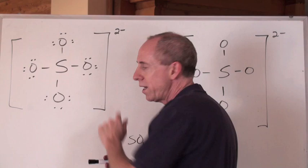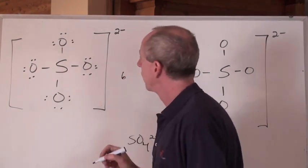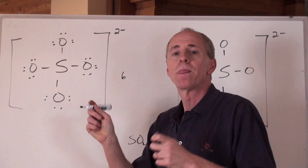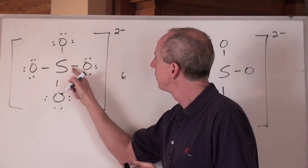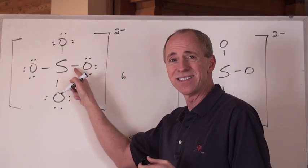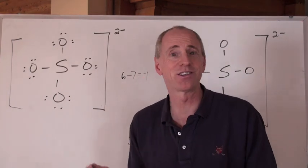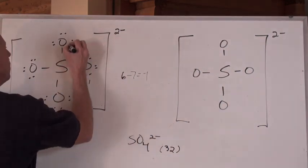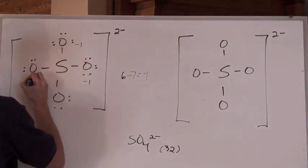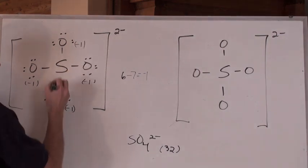For this oxygen right here, it's normally in group 6 of the periodic table, but what's its assigned valence in this molecule? Two, four, six, and half the bonding electrons means seven. Six minus seven equals negative one. And that's just called the formal charge. So here's what you do. You just put negative ones underneath all of these right here. You just say, these are all negative one, just to tell yourself.